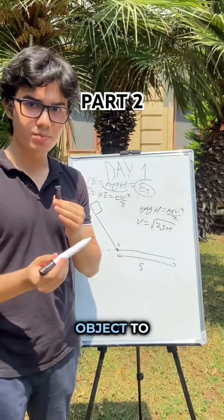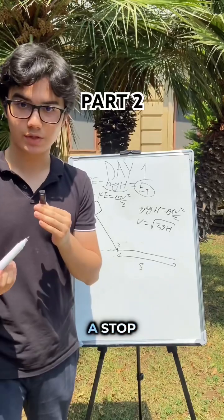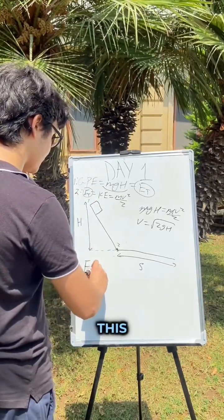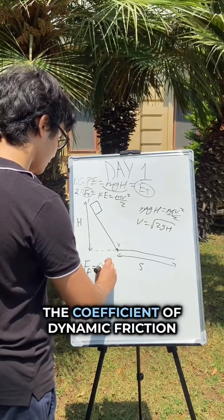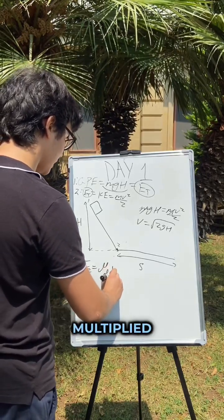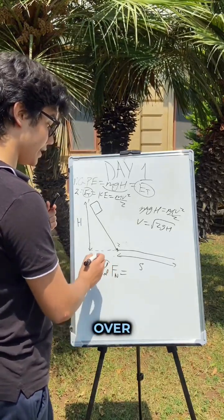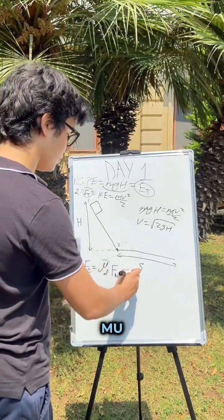This friction is going to cause our object to decelerate and eventually come to a stop. We know that the friction force is given by this equation right over here - the coefficient of dynamic friction multiplied by the reaction force. It's given that our dynamic friction is going to be mu.